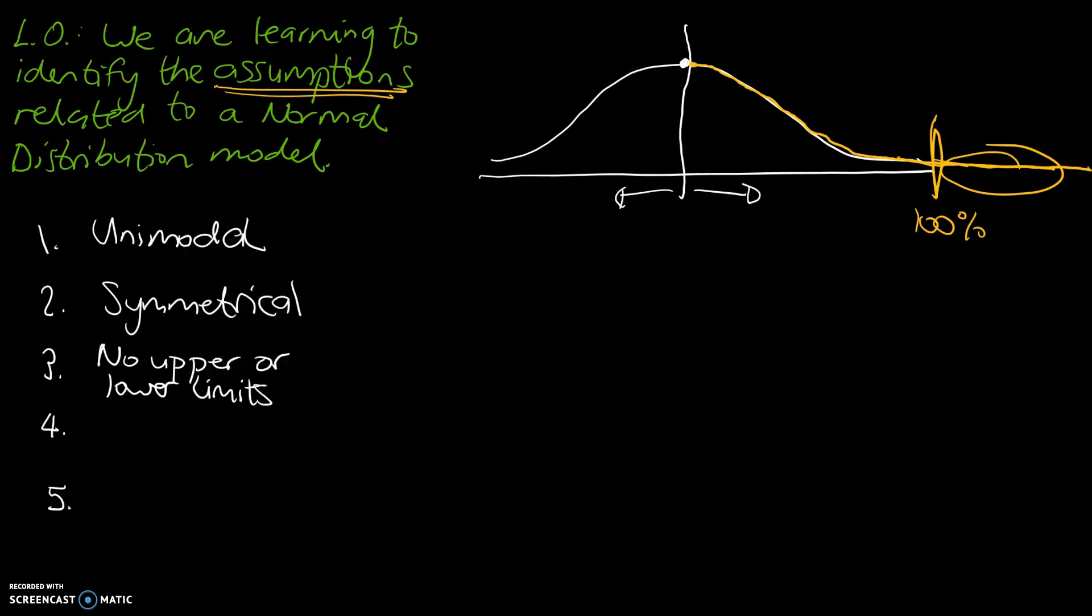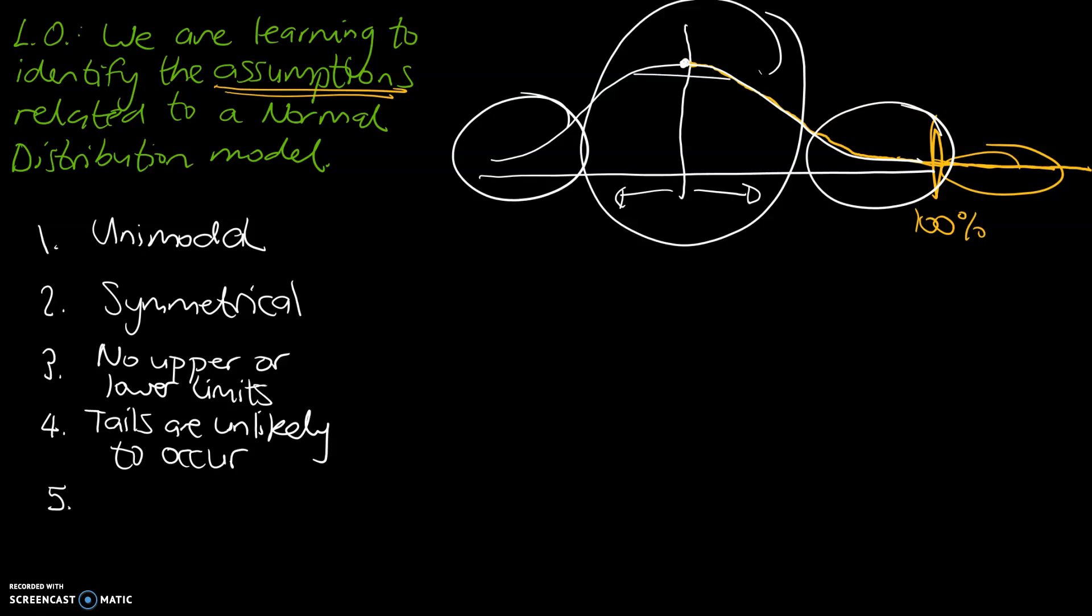The next assumption is the tails are unlikely to occur. So that means the right-hand side and the left-hand side, those tails are very unlikely to occur when compared with the middle of our data. And that's because in a normal distribution curve, you'd expect most bits of data to fall near the middle or near the mean.